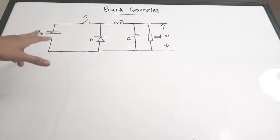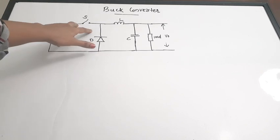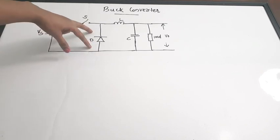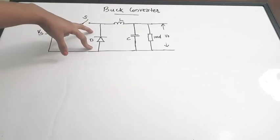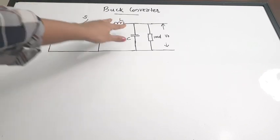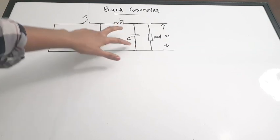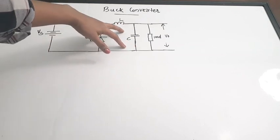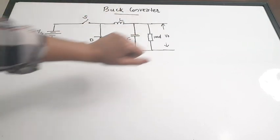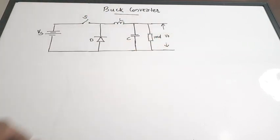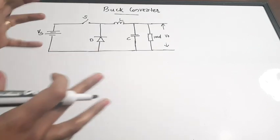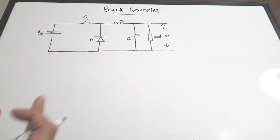Looking at the circuit diagram: there is a supply voltage, a switch, and a freewheeling diode connected in parallel. Then there is an inductor, and a capacitor connected in parallel with the load. The output voltage is taken across the load. These are the elements present in the circuit.